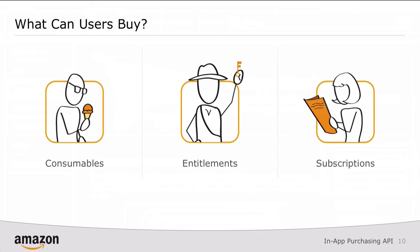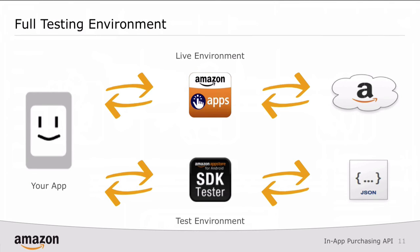So what can your users buy? You can create SKUs for consumables — think of these as individual items within a game, maybe a power-up or a special extra life. Entitlements: think of this as going from a minimal version with minimal functionality to a full-blown pro version. Subscriptions let you sell different types of recurring plans, for example a magazine with a monthly subscription. There's also a full test environment. The Amazon App Store client, which handles all transactions in the live environment on Kindle Fire or Android devices, is mimicked through something called the SDK tester, so you don't have to actually purchase full items when you're testing your app.